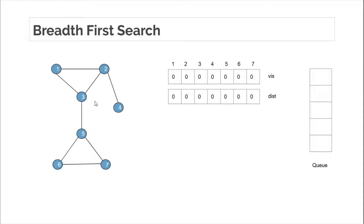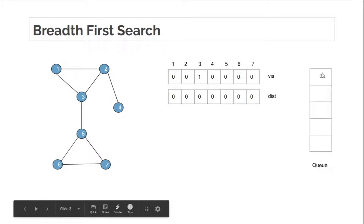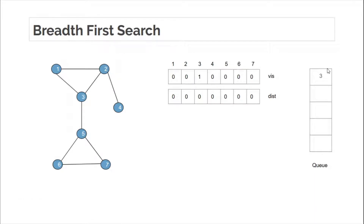BFS traverses the graph in level-order fashion: level 0, then level 1, then level 2, and so on. We start by inserting the source into the queue — the front of the queue is where removal happens and the back is where insertion happens. We insert the source into the queue, mark it as visited, and initialize its distance to 0. While the queue is not empty, we take the front element as current node, so 3 becomes our current node and is popped from the queue.